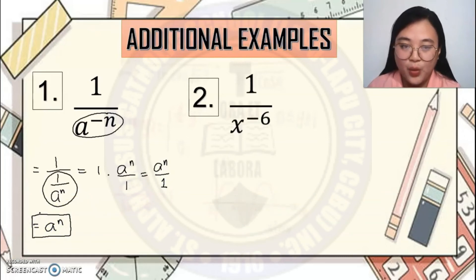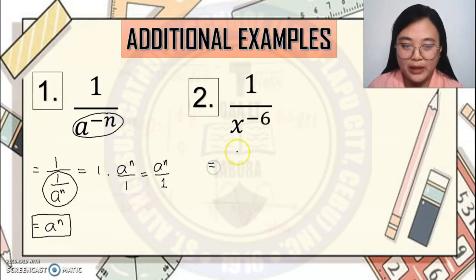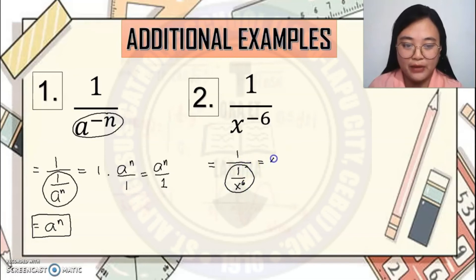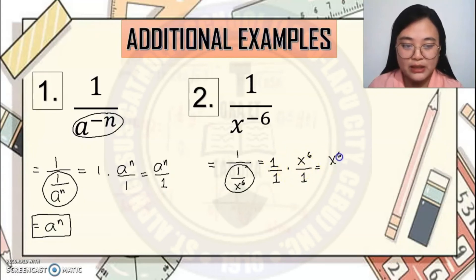Next example: 1 over x raised to negative 6. We make the exponent positive: 1 over (1 over x raised to 6). Taking the reciprocal of the denominator gives 1 times x raised to 6 over 1. The final answer is x to the 6th.